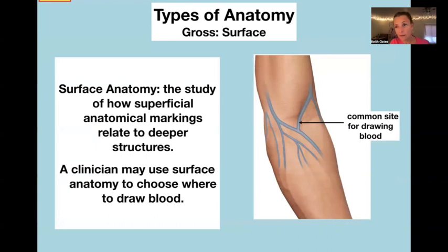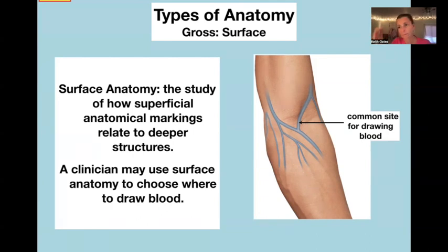Surface anatomy is the study of how something you can see on the surface of a person — on their skin — relates to deeper structures. It's very helpful clinically because that's often the only way you can observe the patient from the outside. For example, a phlebotomist — somebody who draws blood — might look at veins under the skin in order to draw blood.